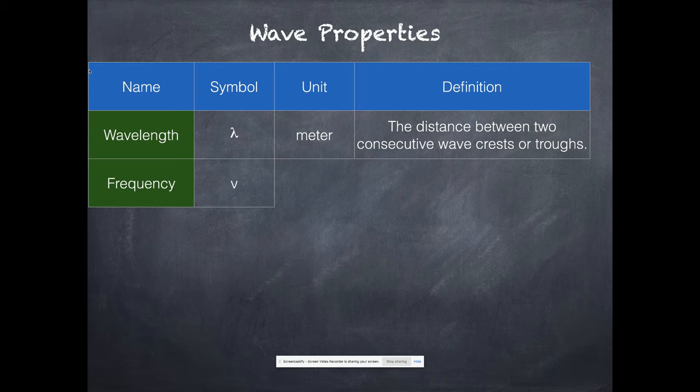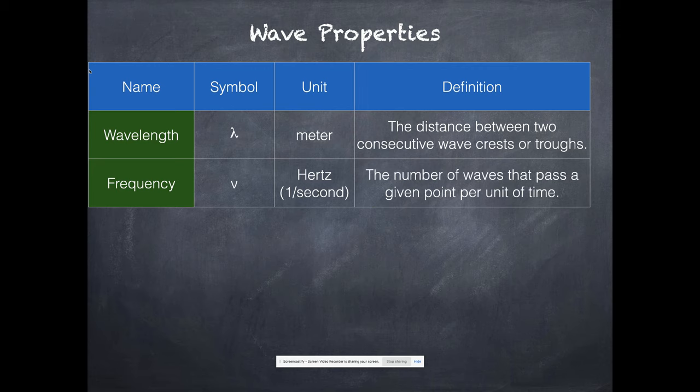Frequency is given the Greek letter nu. This is not a very good looking nu. Nu is actually a little curvier than this. The unit is the hertz, which is one over second or per second. And I write that more often than I write hertz because you can make it cancel. It's the number of waves that pass a given point per unit of time.